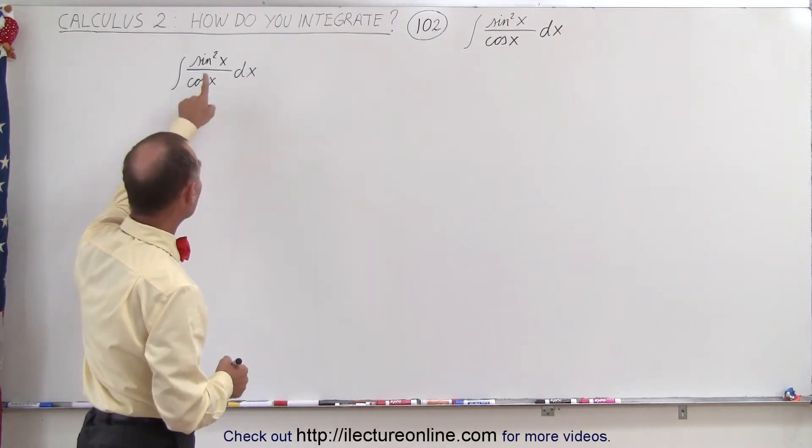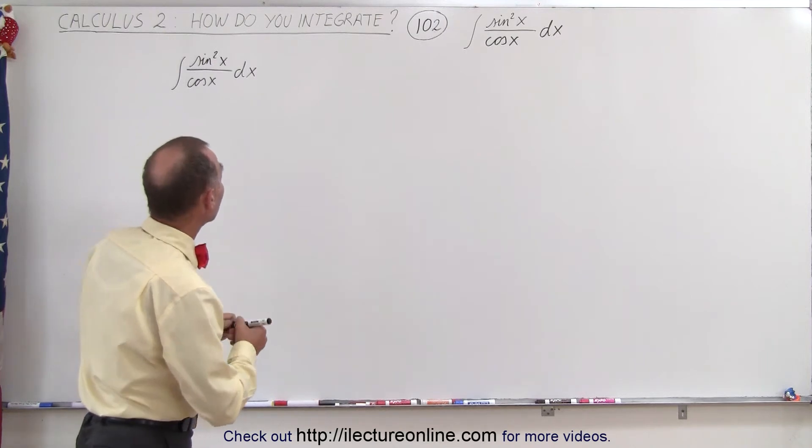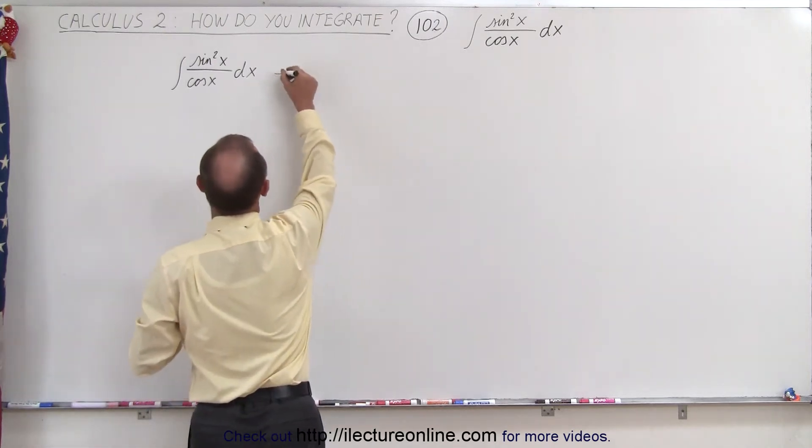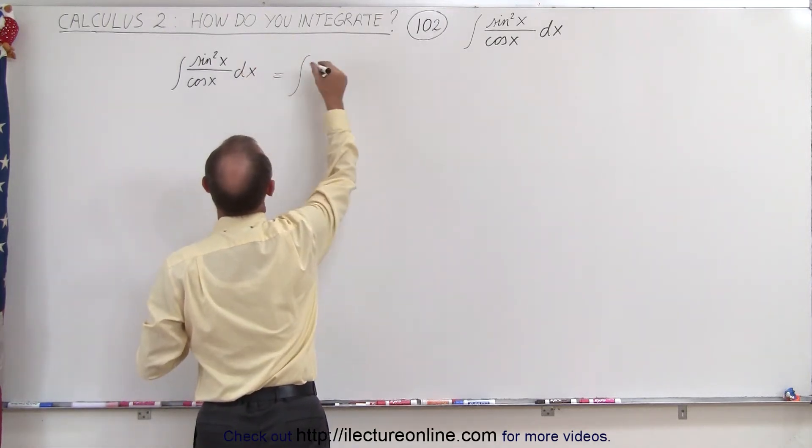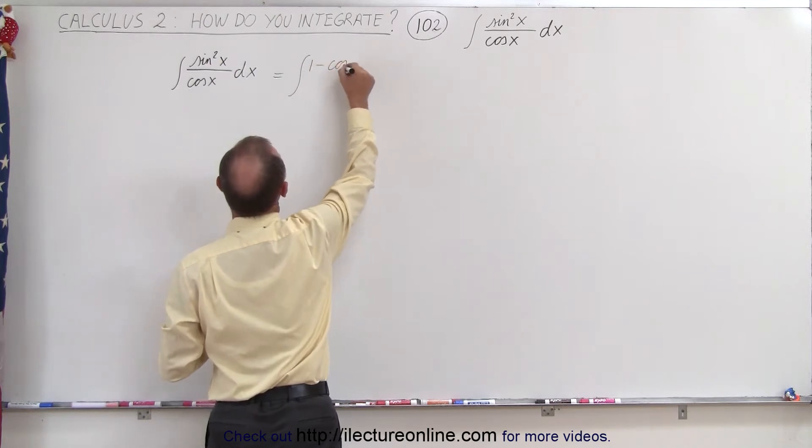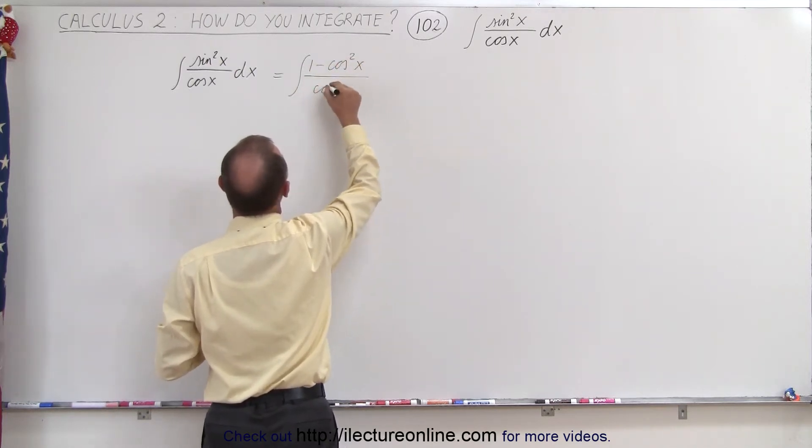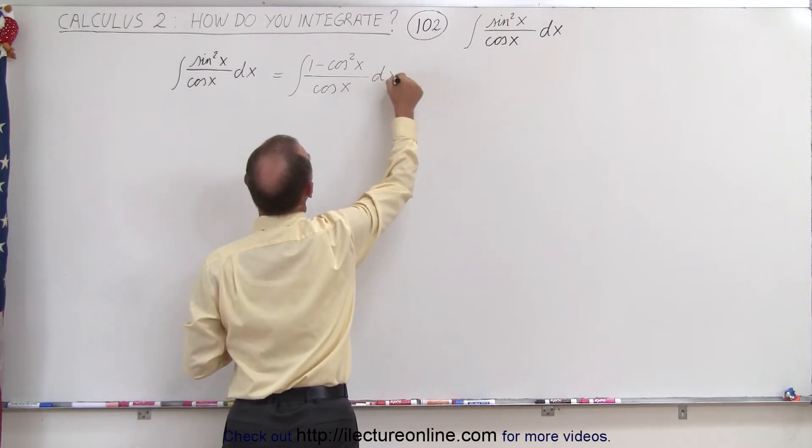So here we have the integral and we see the numerator. We realize we can rewrite the numerator as follows. This can be written as 1 minus the cosine squared of x divided by the cosine of x times dx.